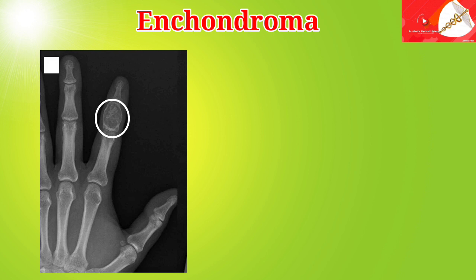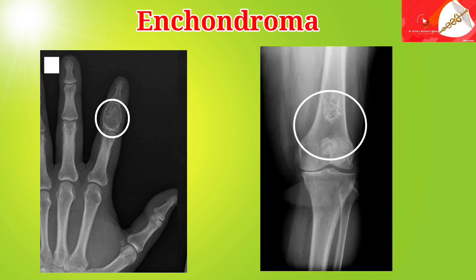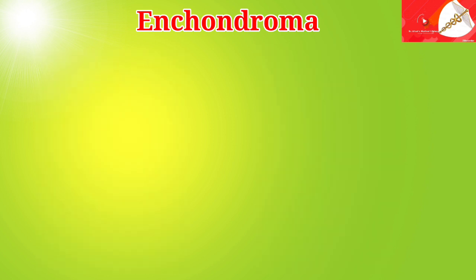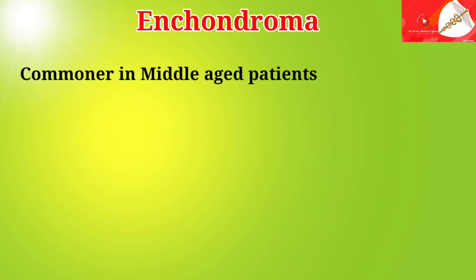Enchondromas comprise lobules of mature hyaline cartilage, partially or completely surrounded by normal bone. Cartilaginous lobules may undergo endochondral ossification, often resulting in the characteristic rings and arcs pattern of mineralization. Enchondromas are more common in middle-aged patients.